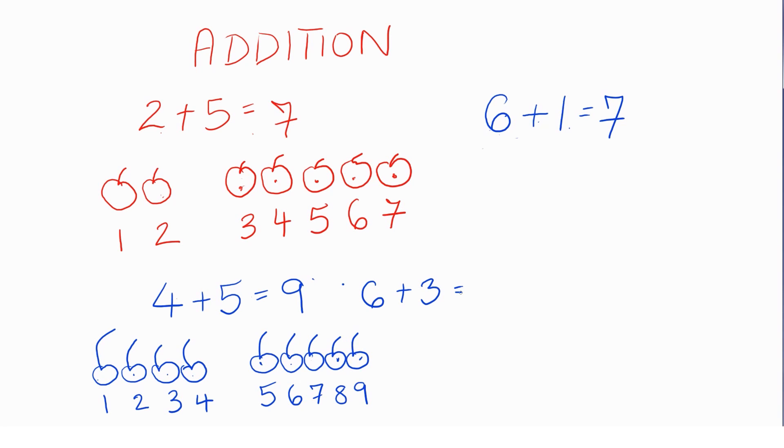Now let's try this one. 6 plus 3. Let's say we have 6 safety pins. So here's 1 pin, it kind of looks like a shoe. But here's another pin. As you can see, I'm not very good at drawing safety pins. That's 3, 4, 5, 6.